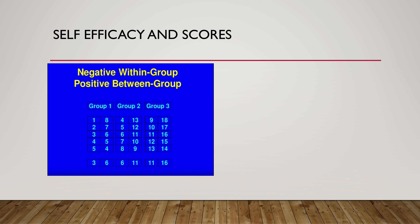Let's look at self-efficacy and scores. If we examine groups one, two, and three, within each group we see a negative relationship. Notice the scores — as X's increase, our Y's are decreasing. However, when we look at the means across groups, as X's increase, our overall means are increasing. So within each group we have a negative relationship, but when we examine group performance by the mean, we get a positive relationship.